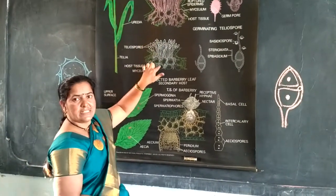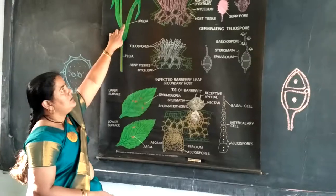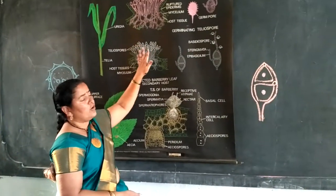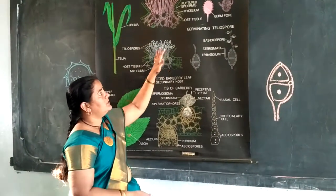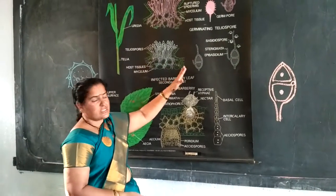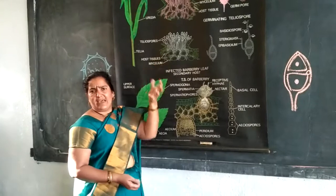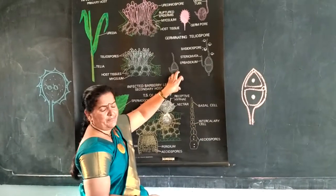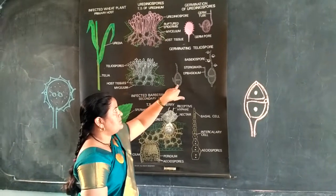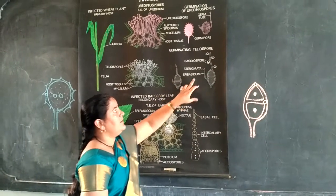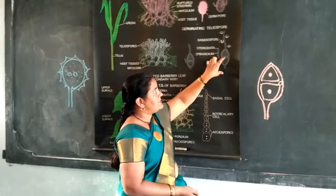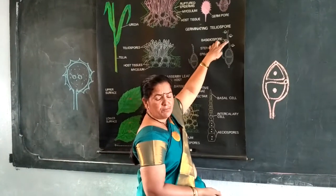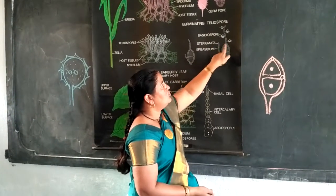These uredial pustules as well as telial pustules are present on the leaf of the primary host. This is the life cycle of Puccinia completed on the primary host. After maturation, the teliospores liberate from the telial pustules and slowly settle on the soil. In the soil, the teliospores germinate and produce the basidial stage. In this basidial stage, the teliospore germinates and produces a germ tube that comes outside through the germ pores. That structure is called a promycelium.